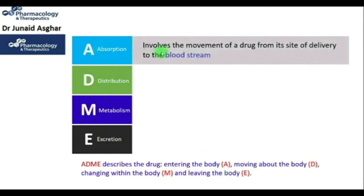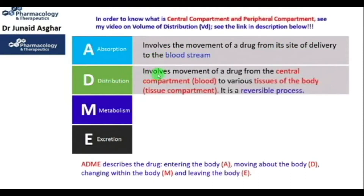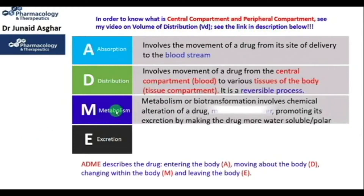Drug absorption involves the movement of a drug from its site of delivery to the bloodstream. Drug distribution involves the movement of a drug from the central compartment — which is blood — to various tissues of the body, called the tissue compartment, and it is a reversible process. Drug metabolism, or biotransformation, involves the chemical alteration of a drug. It mostly takes place in the liver, and promotes excretion by making the drug more water-soluble or more polar.